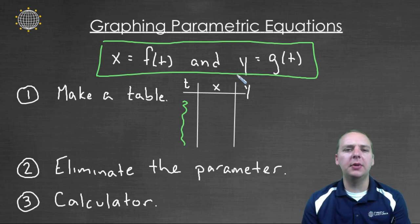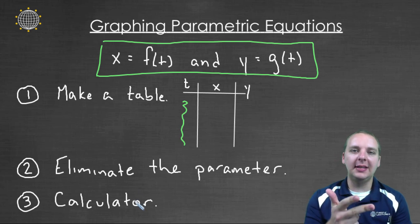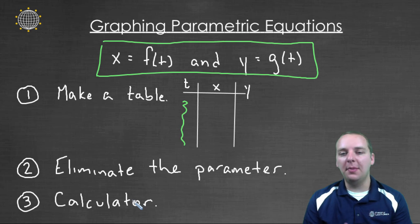Now that's a bit time consuming, so there are two other ways. The second way would be to do something called eliminate the parameter. See, we have x's, y's, and t's, and we're very comfortable graphing with x's and y's. We've done that for a long time, but this new t that's thrown in there is really bothersome. So what we can do is we can eliminate the parameter, we can take out the t somehow, and get it back into a more comfortable format with just x's and y's.